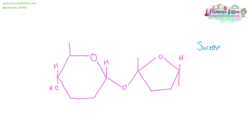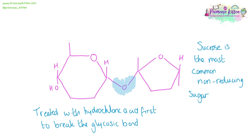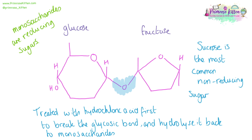Sucrose is a disaccharide and it is a non-reducing sugar. That means sucrose will not give a positive test using the Benedict's reagent — it will stay blue and we will not see that brick red precipitate. If we broke the glycosidic bond in the middle, we could break it down into monosaccharides again. To do this, it needs to be treated first with hydrochloric acid to break the glycosidic bond. The hydrolysis reaction will break it down back into monosaccharides — a monosaccharide of glucose and a monosaccharide of fructose. Glucose and fructose are both reducing sugars and will give a positive test with Benedict's reagent.